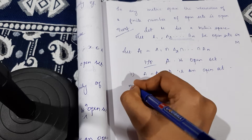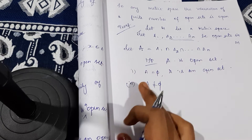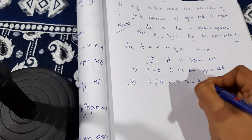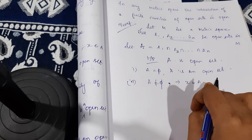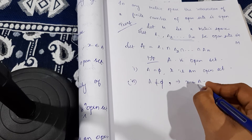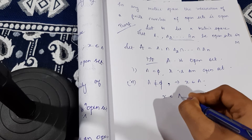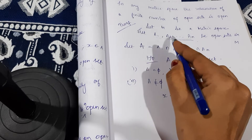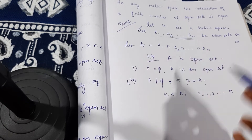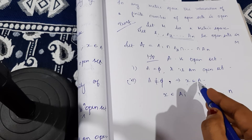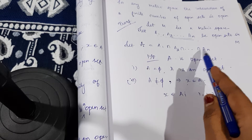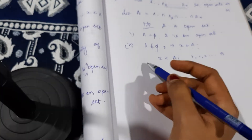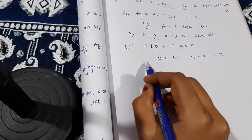Case two: suppose A is non-empty. A non-empty implies there exists x belonging to A. If x is in A, then x will also be in each Aᵢ, where i = 1, 2, ..., n. So if x is in A, it will also be in all of A₁, A₂, ..., Aₙ.